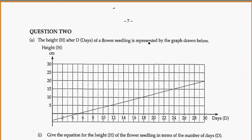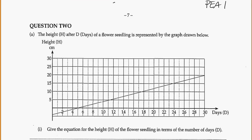So, carrying on trying to complete the first practice exam out of the P book on graphs, tables, and equations. We're on to question 2. See the previous videos if you like for question 1, part A and part B. The height h after d days of a flower seedling is represented by the graph drawn below. We see height on our y-axis and d on our x-axis. Give the equation for the height of the flower seedlings in terms of the number of days.